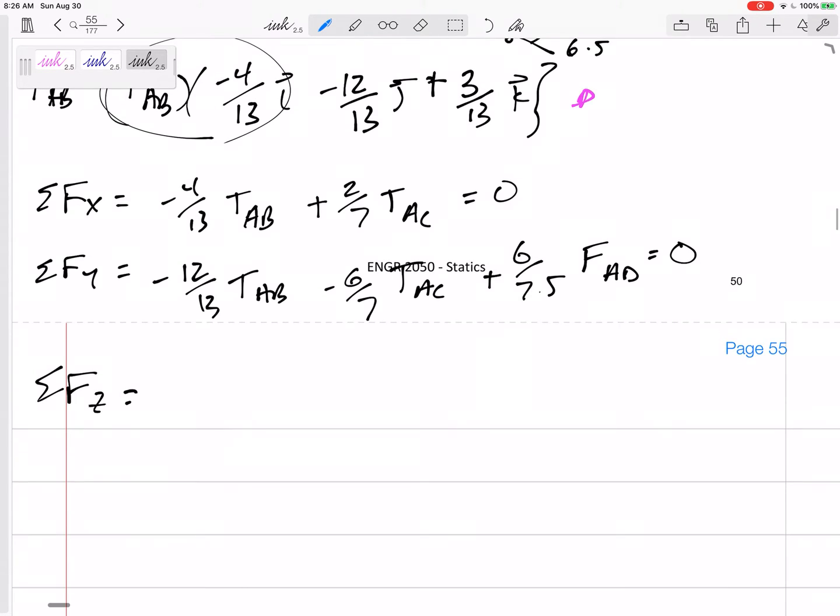And then, the last one, sum the forces in the Z. 3 thirteenths TAB plus 3 sevenths TAC plus 2.5 over 7.5 FAD minus W equals 0. Alright, so I have, right now, I have three equations and I have four unknowns.